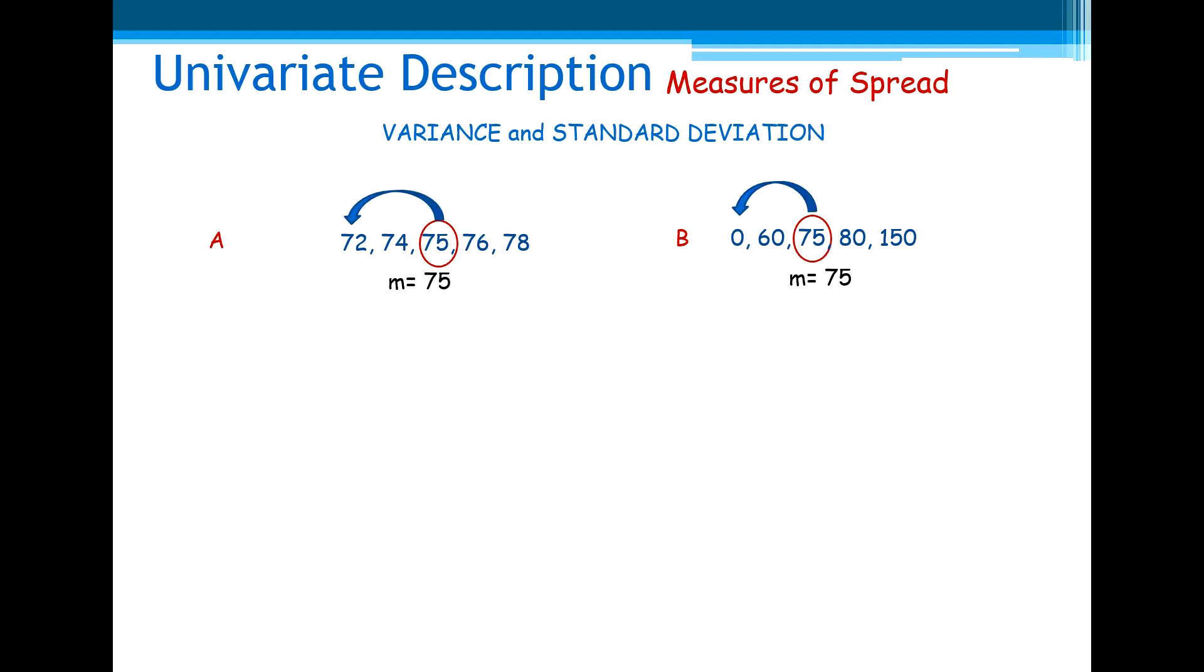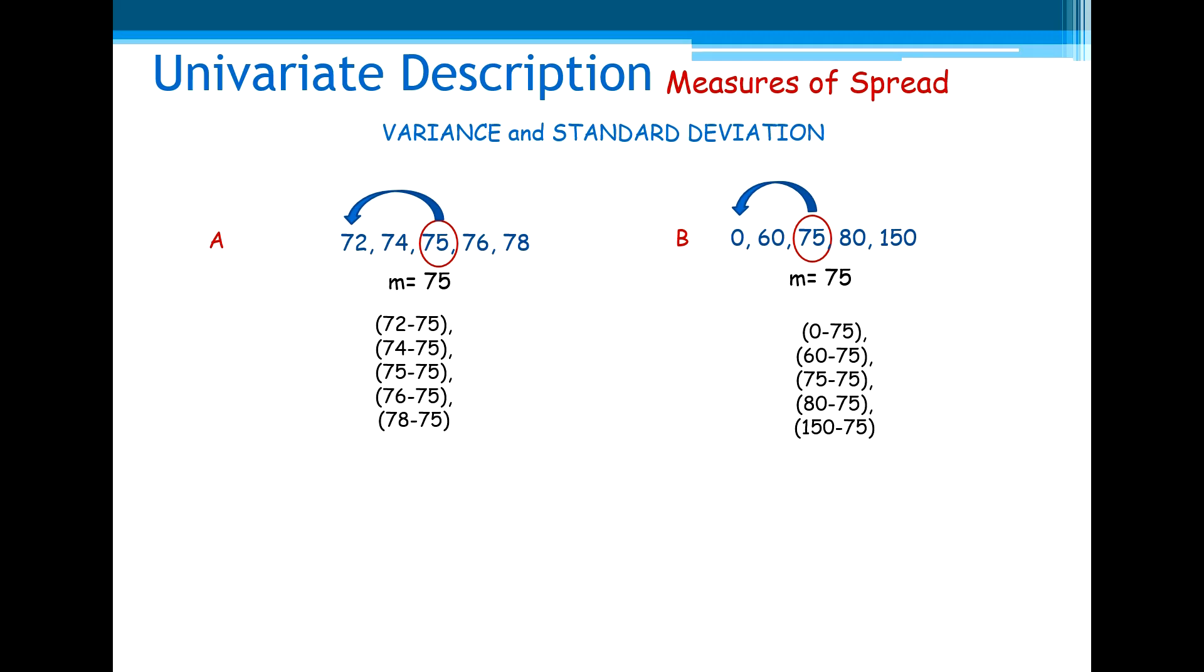So let's start by calculating the deviations between each value and the respective mean. For example, those deviations. If we square those deviations, the variance is nothing else than the mean of the square of those deviations, and the standard deviation is just the square root of the variance.